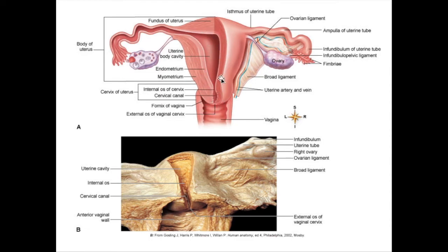When you have two fetuses inside the uterus, the pressure on the cervix is extraordinarily higher than just one. Therefore they will do a cerclage — they sew the cervix shut — and that just keeps it closed. Because effacing, or the thinning of the cervix, is one of the marks of the end of pregnancy when a woman is really ready to give birth. So you don't want it thinned too soon.